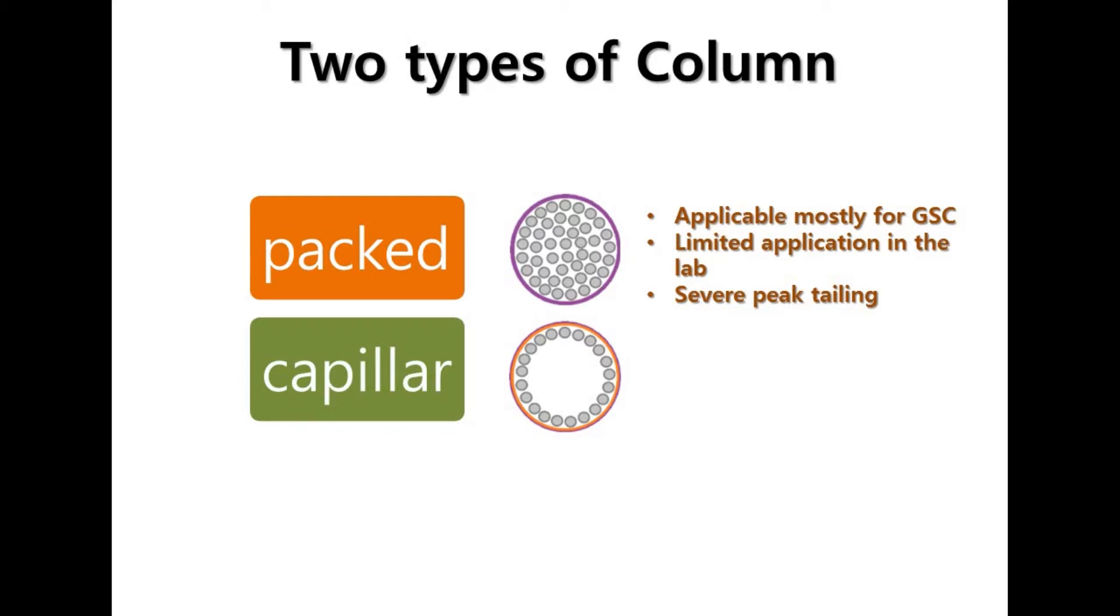The big difference between these two types of columns is where we can apply them. A packed column is applicable mostly for GSC, gas solid chromatography. It means it has limited application in the laboratory environment.